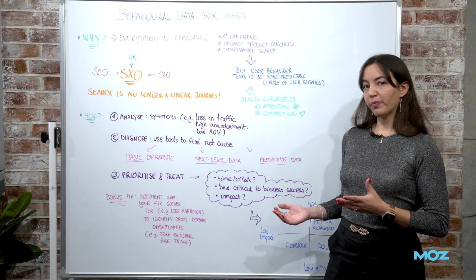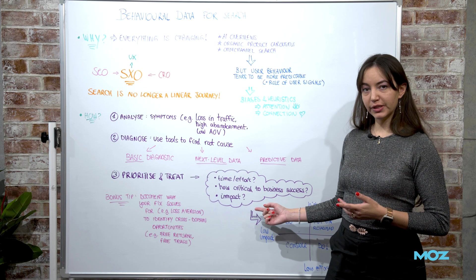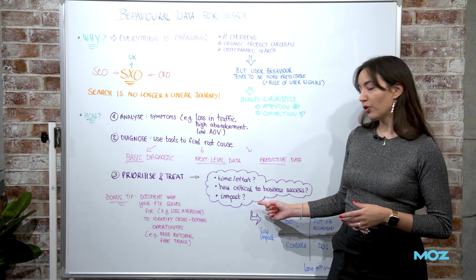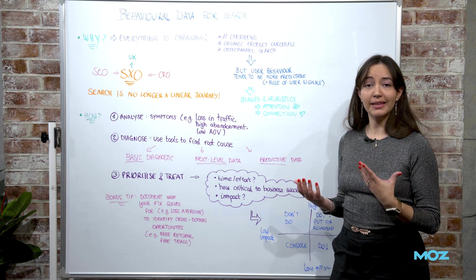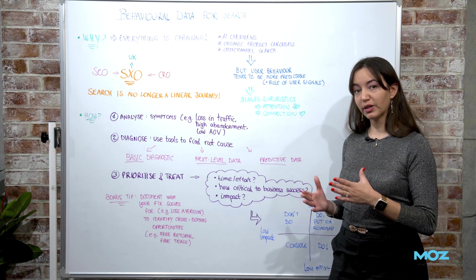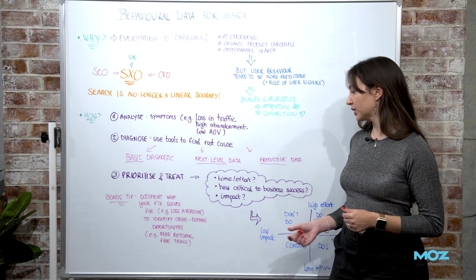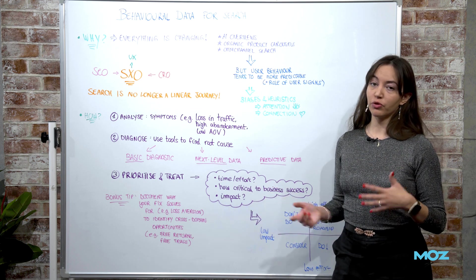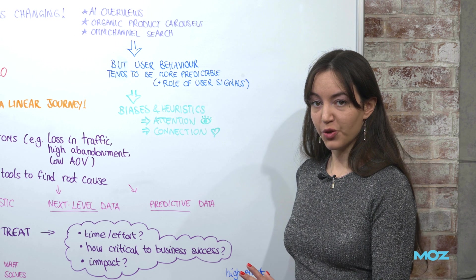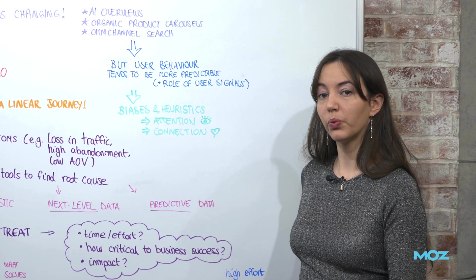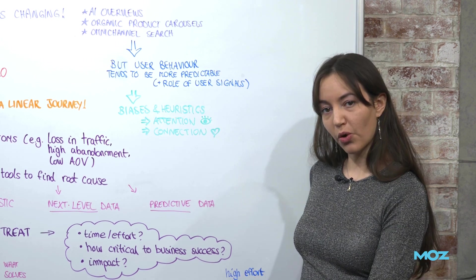So what I recommend you do is to ask yourself, what's the time and effort involved in this fix? How critical is it for the business in terms of actual, is it a nice to have? Or is it something critical because it blocks the journey to conversion? And what's the actual impact of ROI of me implementing this fix for the business? So this will inform your prioritization metrics where everything with high impact will get done either now or later.